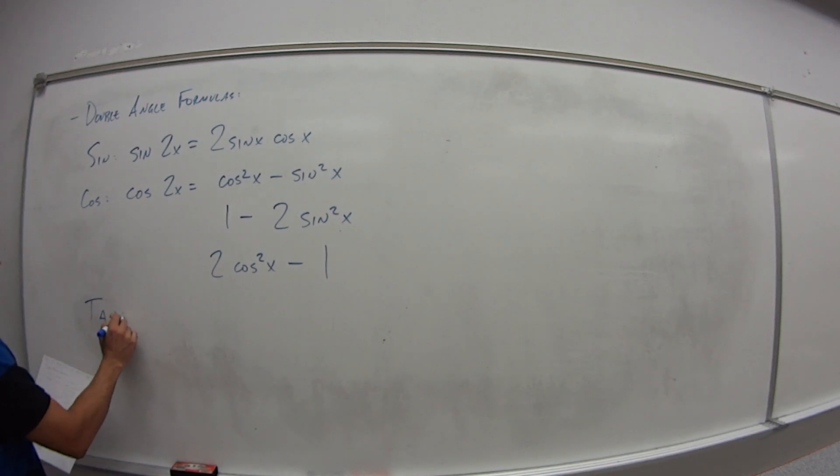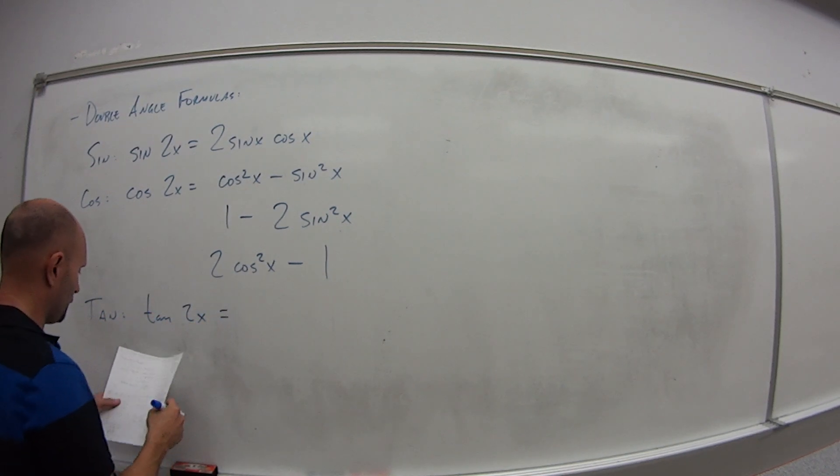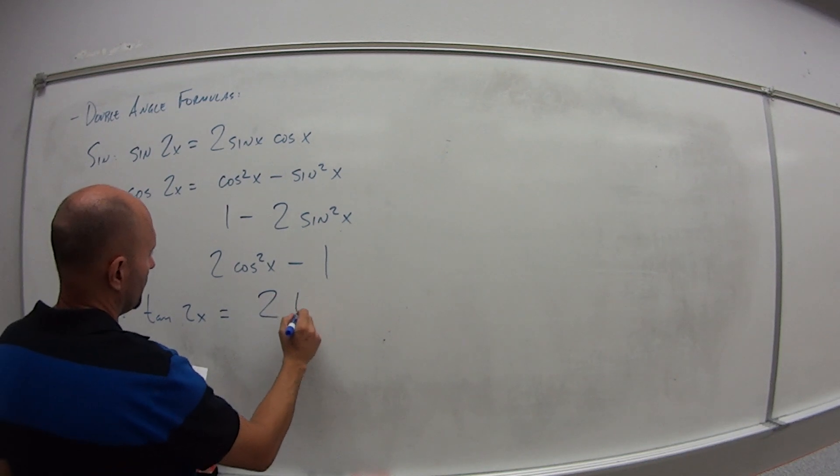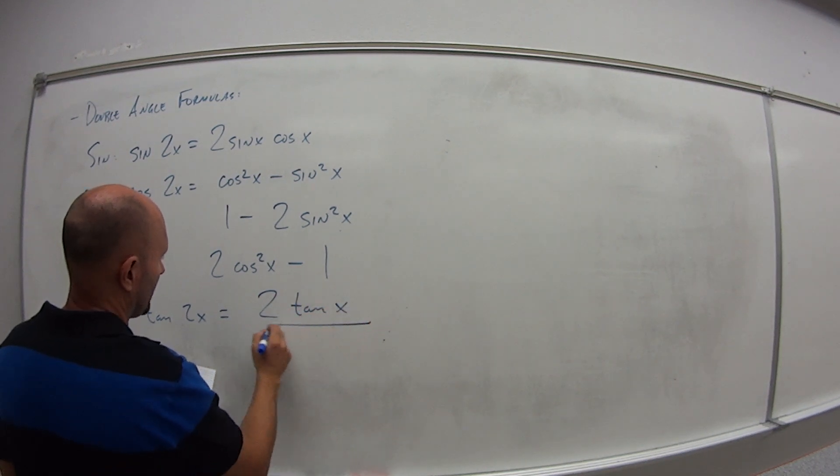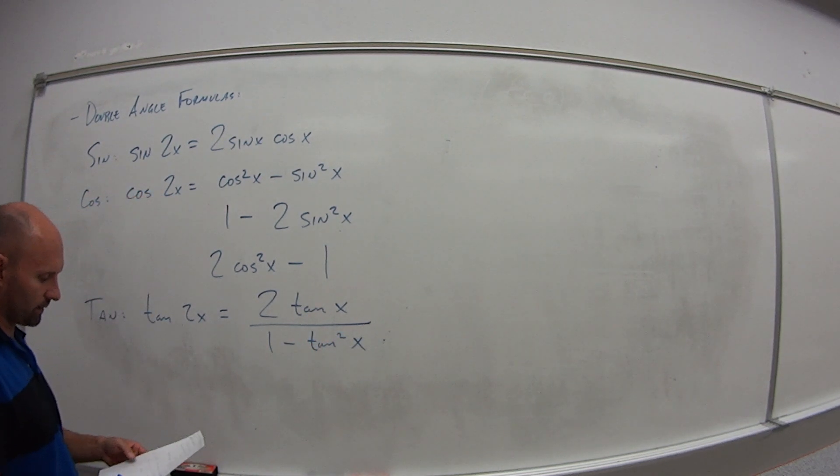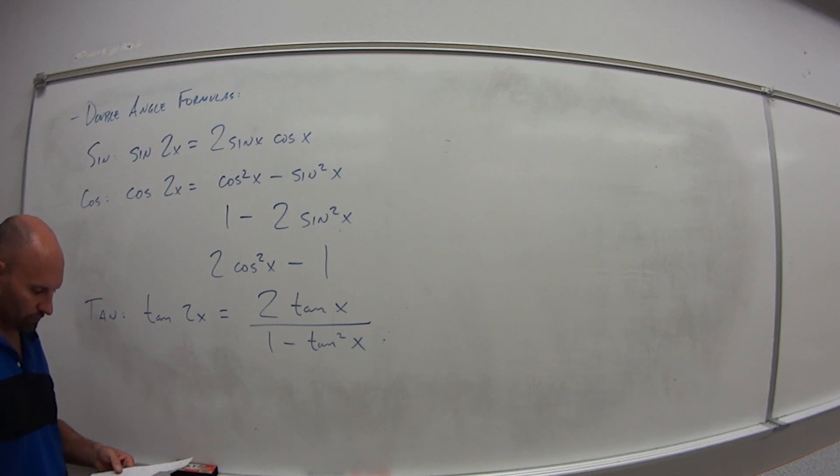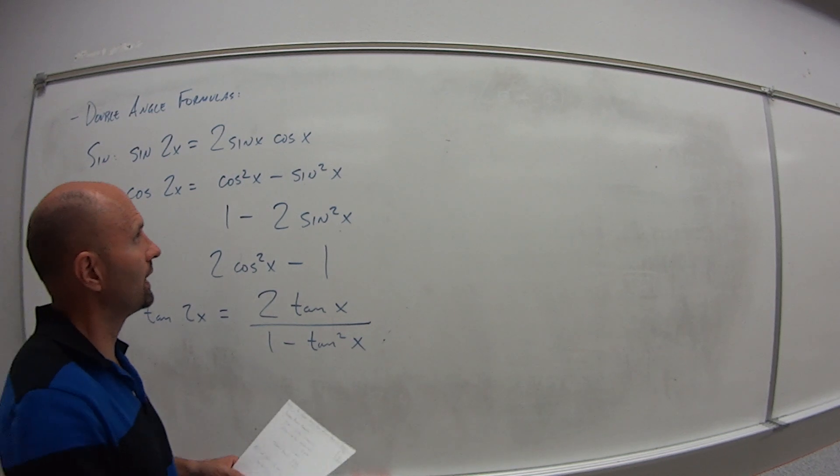And then lastly for tangent. So tangent of 2x is equal to 2 times tangent of x over 1 minus tangent squared of x. So you got these different possibilities, double angle formulas. So let's look at an example.